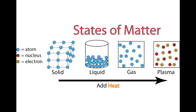Let's look at this graphic. In a solid, particles are all really close together. In a liquid, they're spread a little bit more. Gas particles are all over the place, and plasma is all over the place just like a gas, but something special happens — it's ionized with charged particles. When we move from solid to liquid to gas to plasma, heat or energy is added. To go back from plasma to solid, we take heat away.